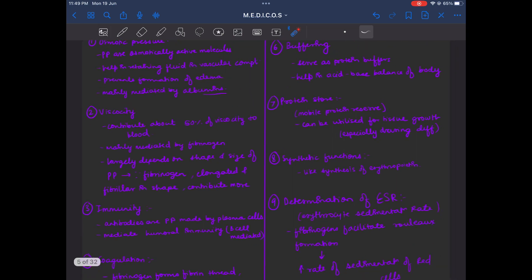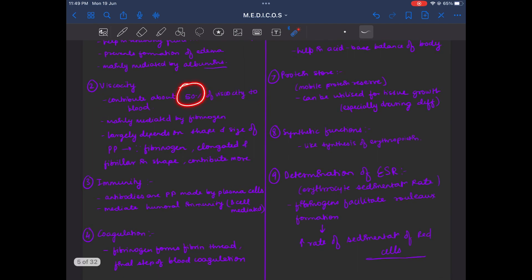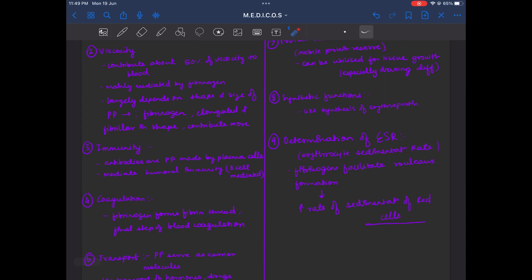Next is viscosity. Plasma proteins contribute almost 50% of the viscosity of blood and fibrinogen contributes more. Why is it important? Because of the shape of fibrinogen. It is elongated and fibrillar in shape. Therefore, it contributes more in viscosity of the blood.